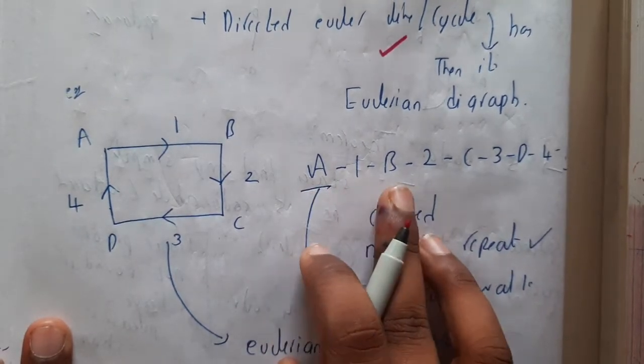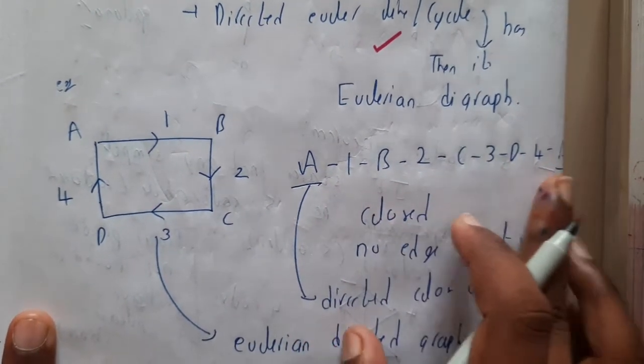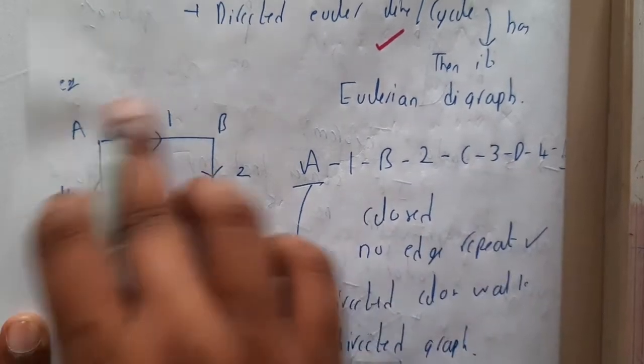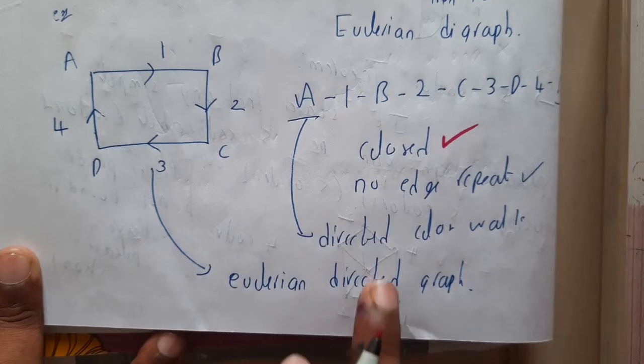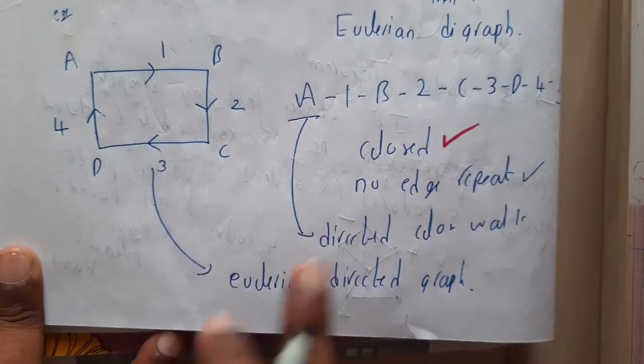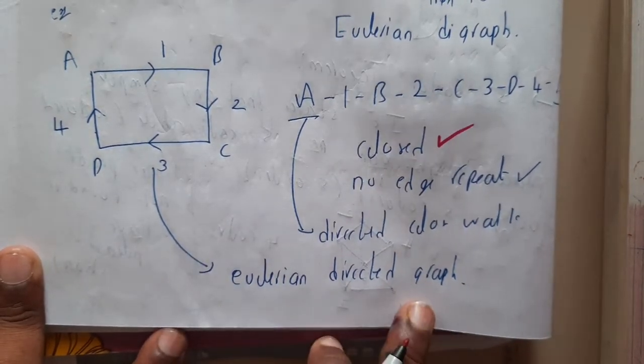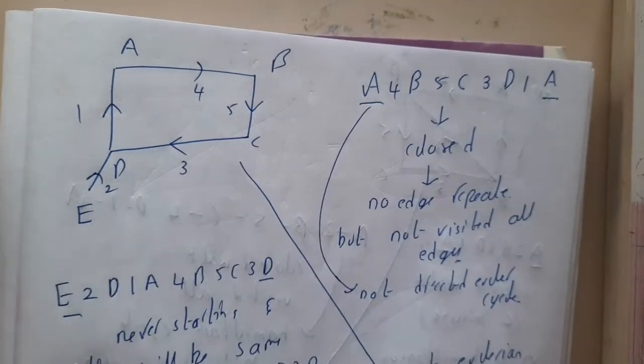A to 1, B to 2, C to 3, D to 4, 4 to A. You completed the cycle. It is closed, yes. No edge repeated, yes. Directed closed walk, yes. Hence, you can conclude that it is a Eulerian directed graph.